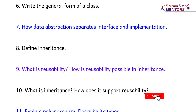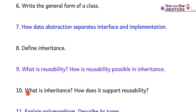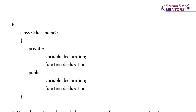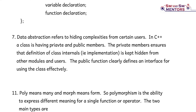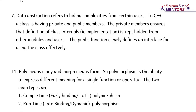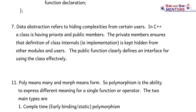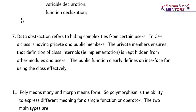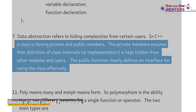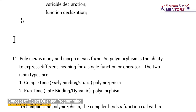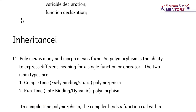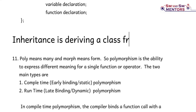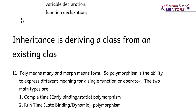Define inheritance. What is reusability and how is reusability possible in inheritance? Inheritance is the ability by which one can derive a new class from an existing class. It implements reusability of existing code. Reusability means to use the existing code in different situations.